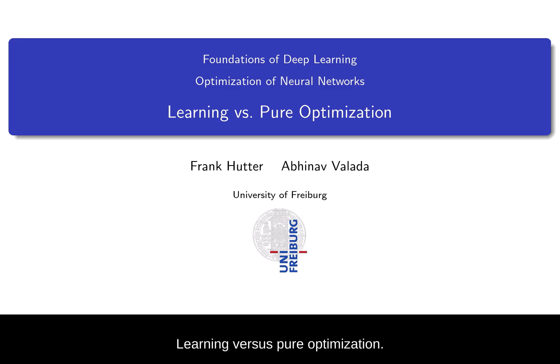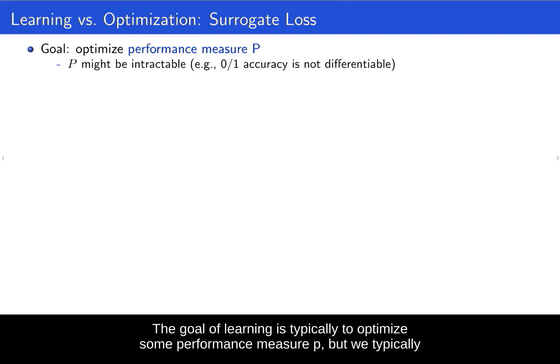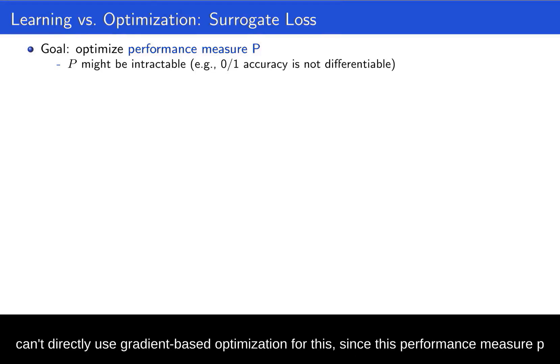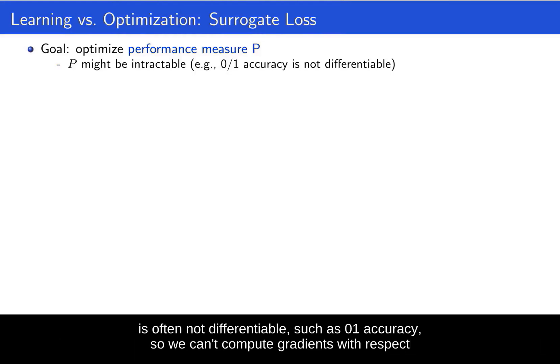Learning versus pure optimization. The goal of learning is typically to optimize some performance measure P. But we typically can't directly use gradient-based optimization for this, since this performance measure P is often not differentiable, such as 0/1 accuracy.